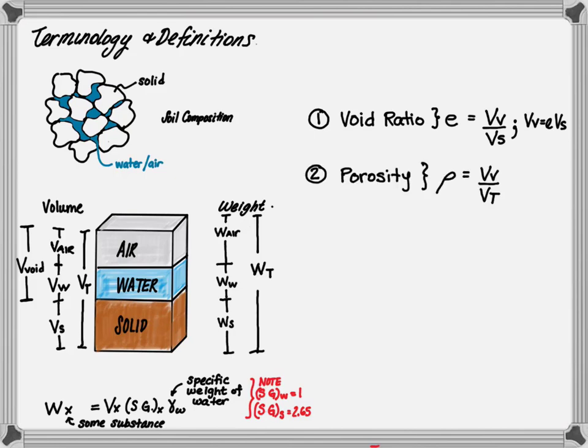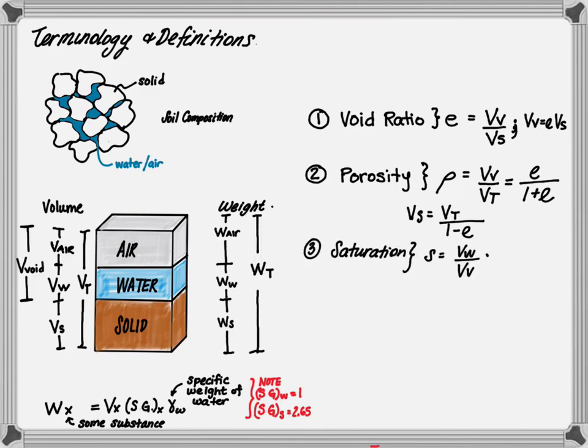The porosity n is the volume of voids divided by the total volume. You can also say it's equal to the void ratio divided by 1 plus the void ratio. Or, the volume of solids is equal to the total volume divided by 1 minus the void ratio. Saturation S is the volume of water divided by the volume of voids.